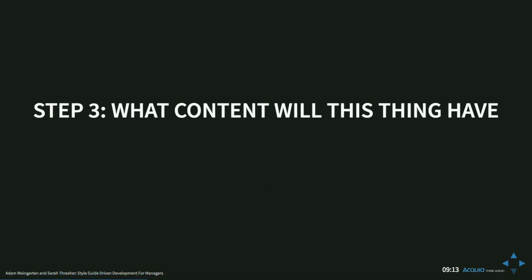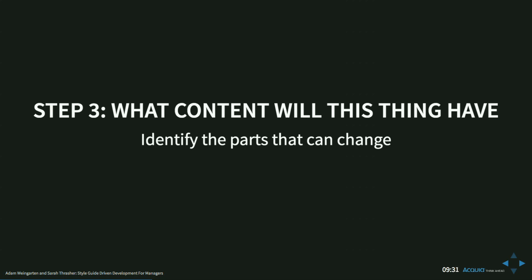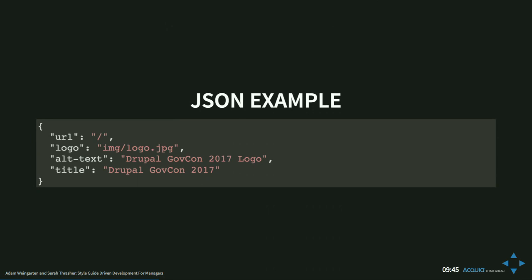What content is this component going to have? Any piece of markup will have text and possibly images, which can be broken into simple variables — like title or body. This example uses KSSNode specifically: a simple JSON file. We have URL because the masthead is linked, logo with alt text, and the title text. These variables have nothing to do with Drupal — if you were building a style guide for a WordPress site, you could use this exact setup.